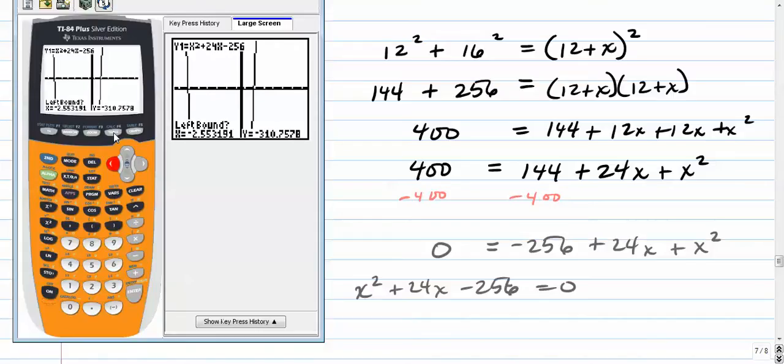The first zero I'm going to try to find is this guy right here. So it's asking me for a left hand bound. All I need to do is kind of put my cursor to the left of that thing. If you want to press left a couple more times, you certainly can do that. And just press enter. Then press right until your cursor is to the right of that potential zero. And that's going to ask you to guess. Just get it really close to that thing and it will give you the answer. Eight comma zero. So that means x = 8 is a solution.